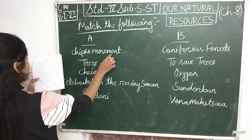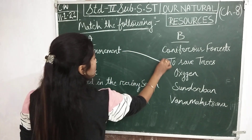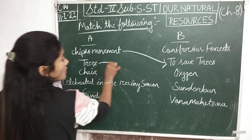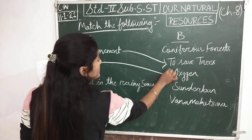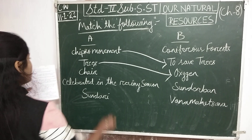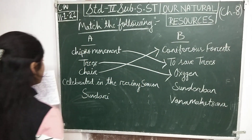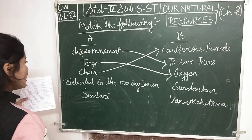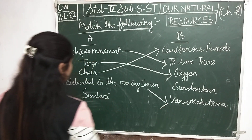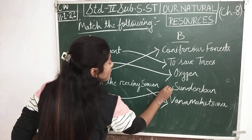The answers are: Chipko movement matches to save trees. Trees matches oxygen. Chair matches coniferous forest. Celebrated in the rainy season matches Van Mahotsav. Sundari matches Sundarban.